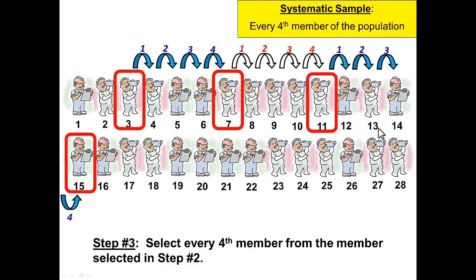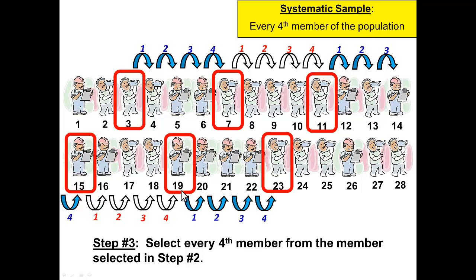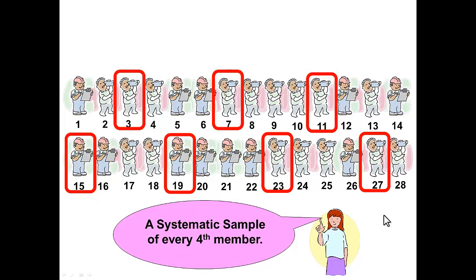Count four more and select the 15th person. Add 4 more to 15 and we get the 19th person. Add 4 more to 19, we get the 23rd person. Add 4 more to 23 and we get the 27th member of our population. And that is a systematic sample of every fourth member.